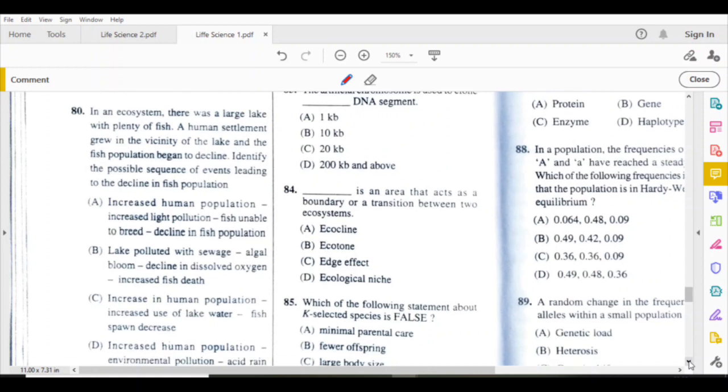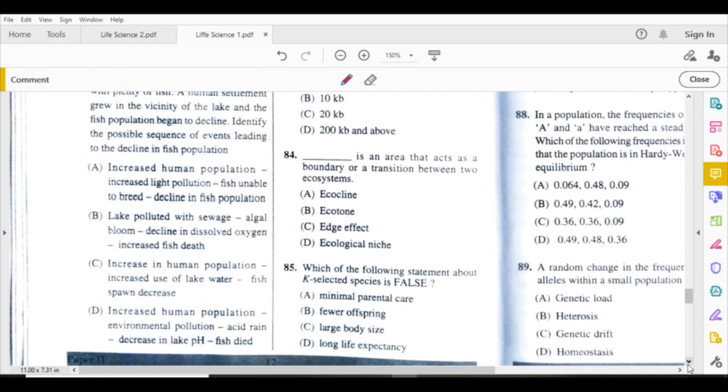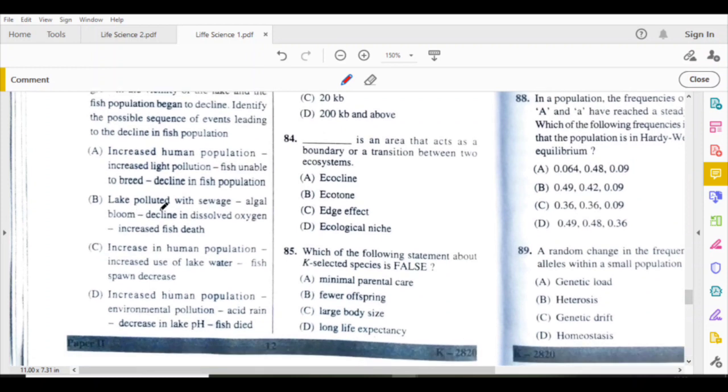Here is the answer. Lake polluted with sewage, algal bloom formed, decline in dissolved oxygen, increased fish death. B is the answer.